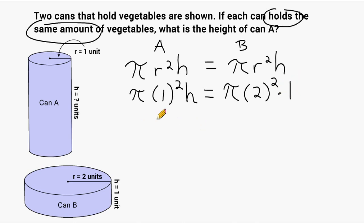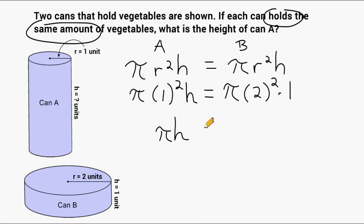Let's simplify what we have so far. On the left-hand side, the only thing to simplify is one to the second power, which is one. So on this side of the equal sign all we have remaining is pi times h — remember, you do not need to write out a coefficient of one. On the right-hand side, two to the second power is four, and four times one is four, so we have four times pi.